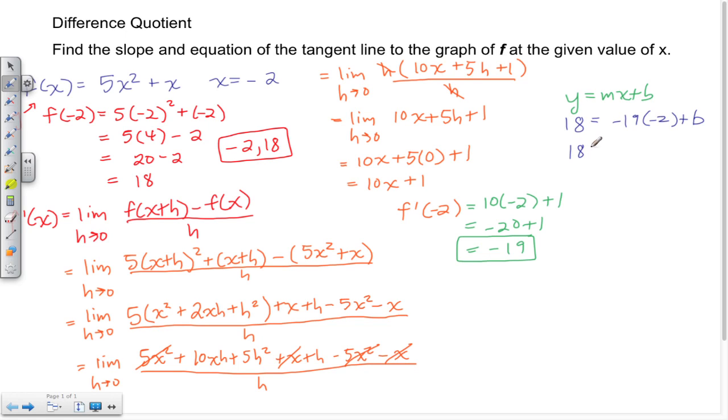So here I have 18 is equal to negative 19 times negative 2, which gives me a positive 38 plus b. I need to get b by itself, so I subtract 38 from both sides. Those 38s cancel and I'm left with negative 20 is equal to b. So the equation of that tangent line is y is equal to the slope negative 19x minus the y intercept which is 20.